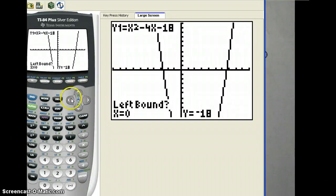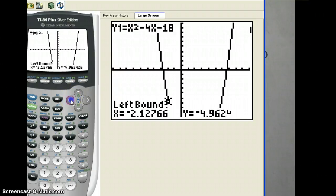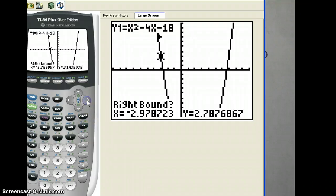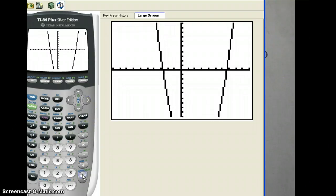We're going to choose number 2 for the zero. Enter. And then we're going to arrow. You keep arrowing until you see the cursor show up. We're going to go to the left of the solution. Enter. Then arrow to the right. Enter. And enter one more time.